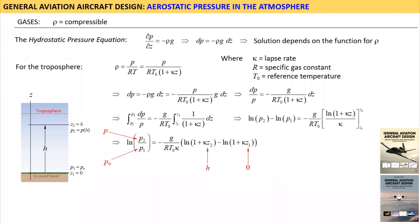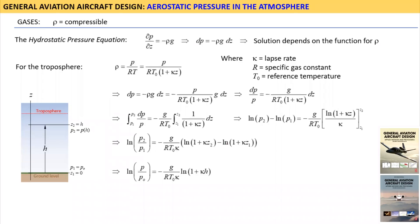Substituting 0 for Z1 will make the term inside the parenthesis become 1, and the natural logarithm of 1 is equal to 0, so this term vanishes. Therefore this whole thing becomes this expression, which tells us that the logarithm of the pressure ratio equals the quantity on the right-hand side of the equal sign.